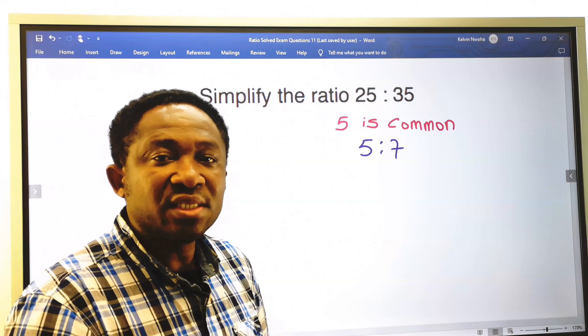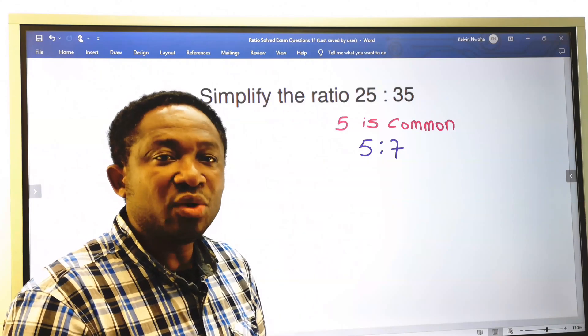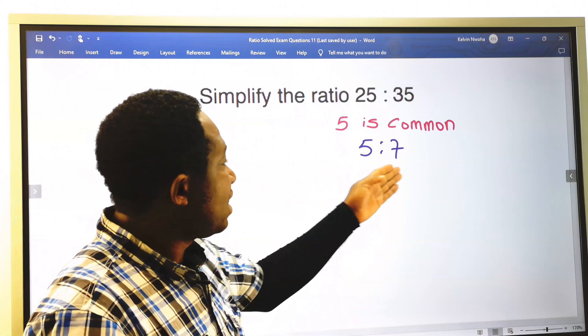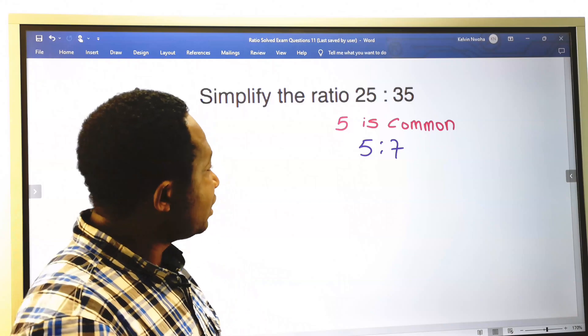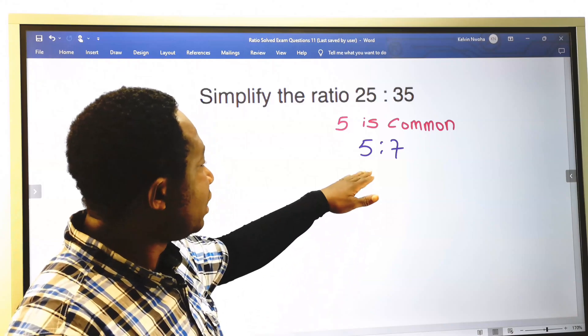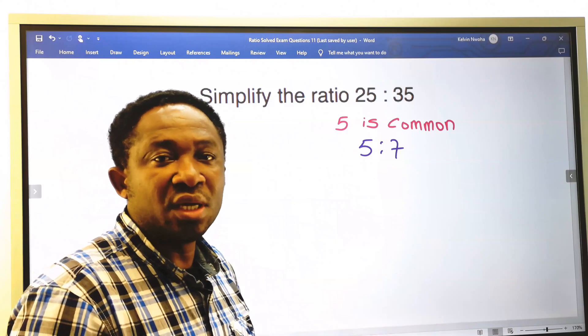This is a one-step solution to this problem. We cannot simplify 5 and 7 any further because there is nothing common that will go into 5 and go into 7 and return a whole number.